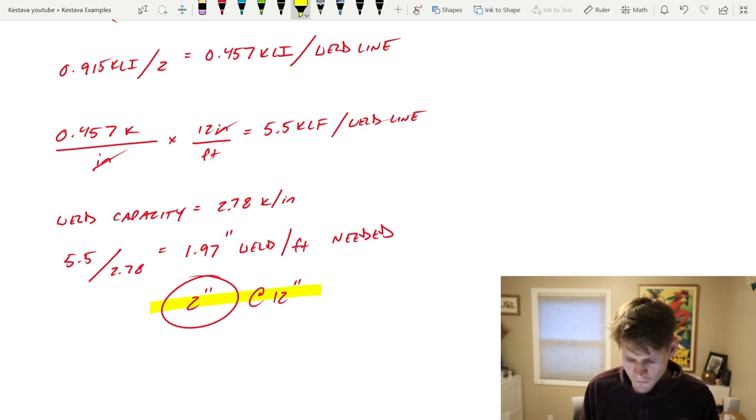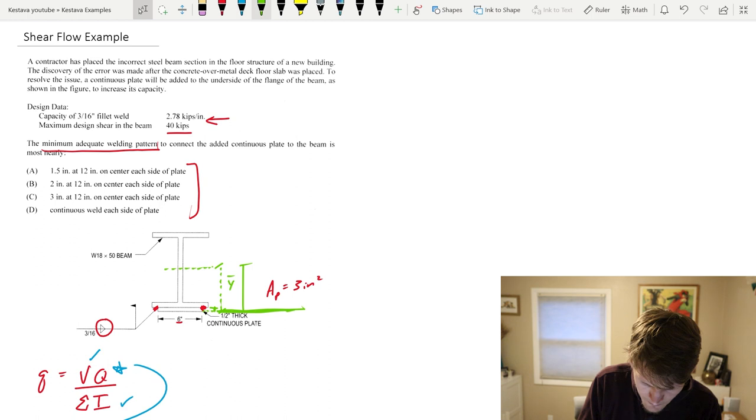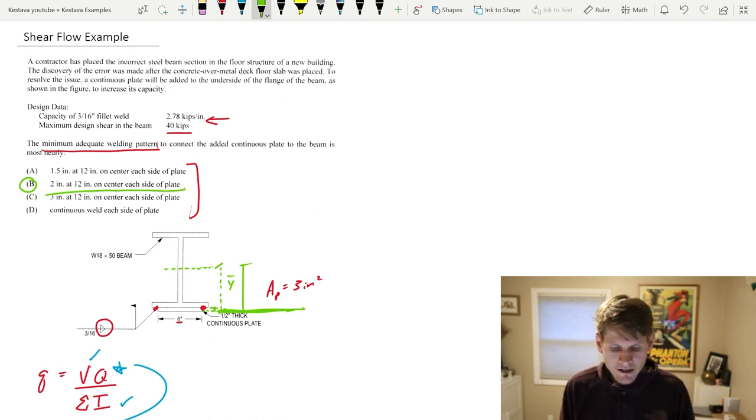So 2 inches at 12, and I'll lock it in with a highlighter. As I go back up here, I would choose B: 2 inches at 12 inches on center each side of plate. And you've just mastered shear flow.